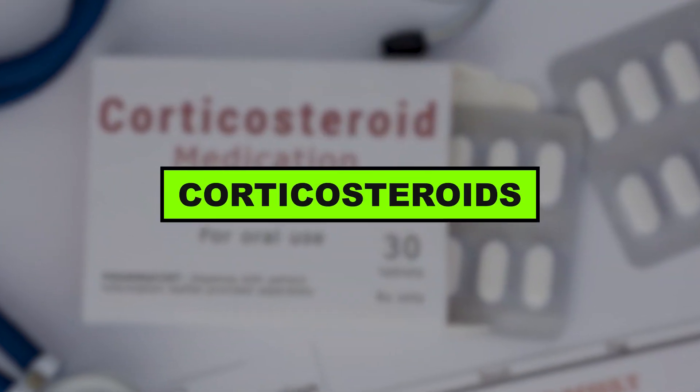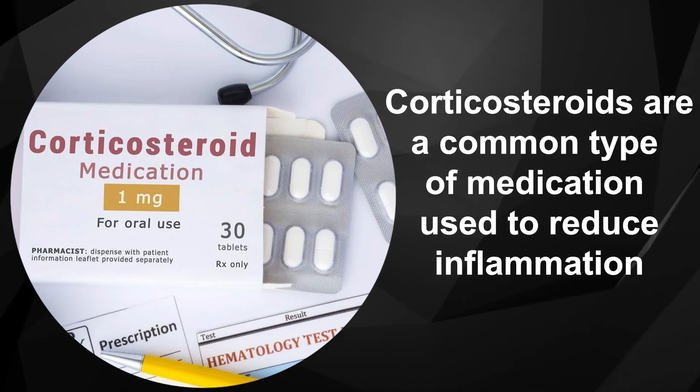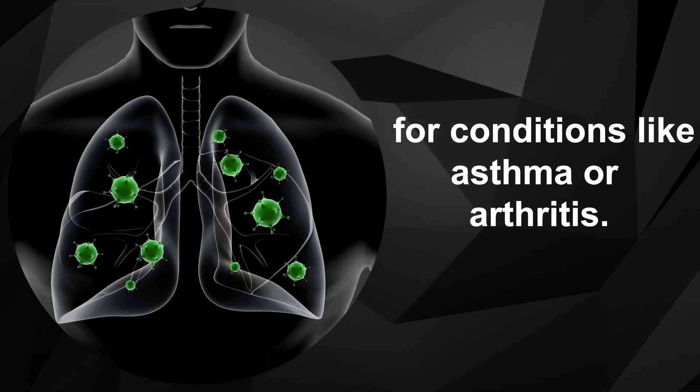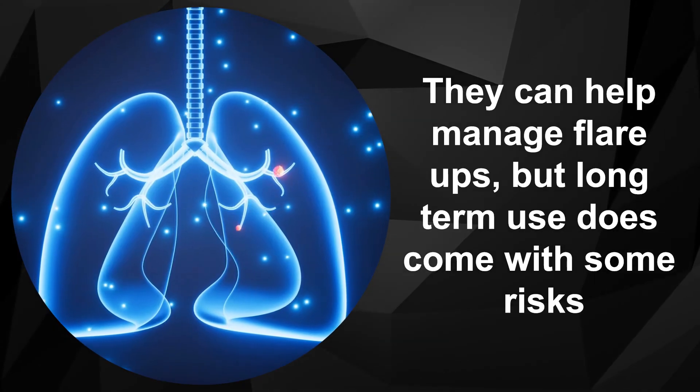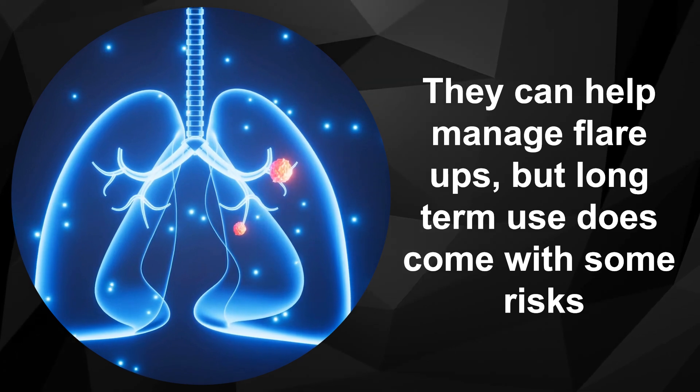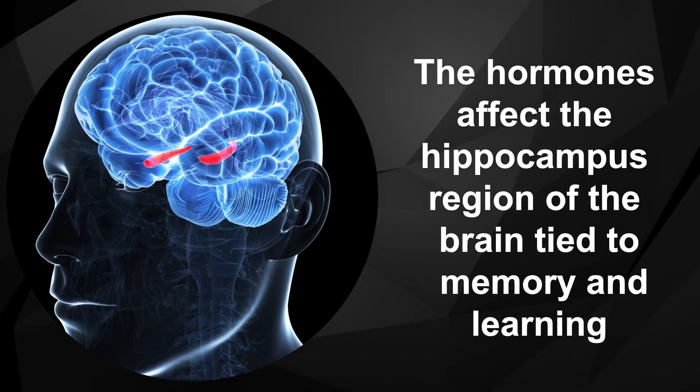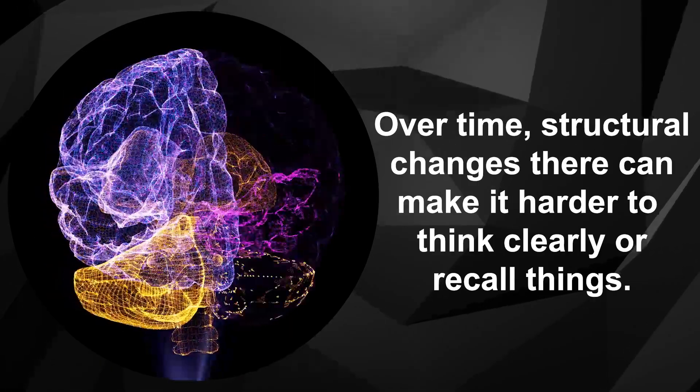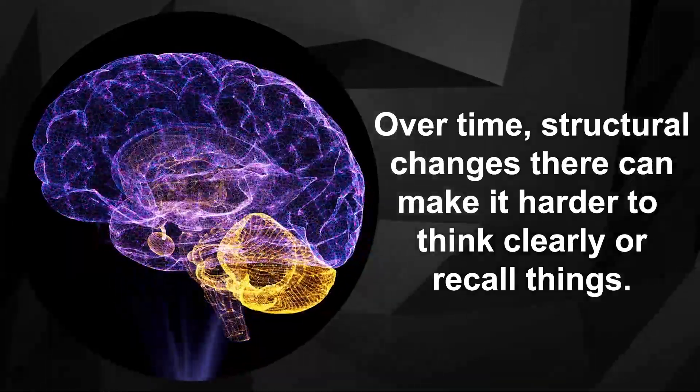Three, corticosteroids. Corticosteroids are a common type of medication used to reduce inflammation for conditions like asthma or arthritis. They can help manage flare-ups, but long-term use does come with some risks. The hormones affect the hippocampus region of the brain tied to memory and learning. Over time, structural changes there can make it harder to think clearly or recall things.